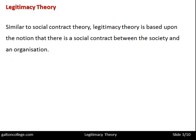Similar to social contract theory, legitimacy theory is based upon the notion that there is a social contract between the society and an organisation — between the society and the business. There is a mutuality; both sides tend to benefit. On the one hand, the organisation will gain profits and promote its interests. On the other side, it will produce products or services that satisfy customer needs, supply employment and promote prosperity within the area.